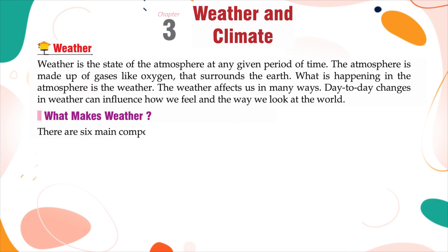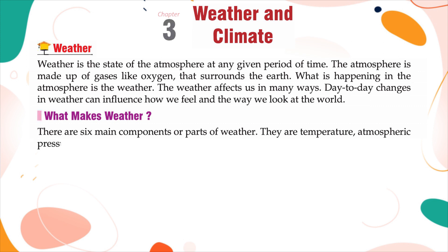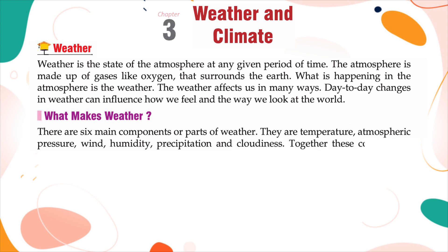What makes weather? There are six main components or parts of weather. They are temperature, atmospheric pressure, wind, humidity, precipitation, and cloudiness. Together these components describe the weather at any given time.